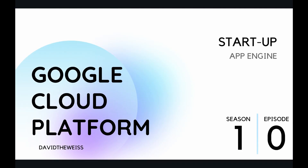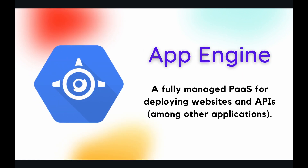Hey coders and welcome to the newest season of our Google Cloud Platform course. In this section, we're going to be covering App Engine, starting out with this introductory episode where we'll be creating our own App Engine application. Let's first define what App Engine is and what it is used for. App Engine is a fully managed platform as a service for deploying websites and APIs among other applications.